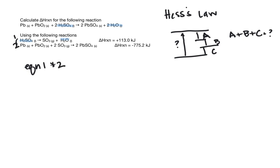We're going to multiply by two. So we have 2H2SO4 equals 2SO3 plus 2H2O. And now our delta H reaction is equal to two times 113.0, because if we have twice as much sulfuric acid, it's going to cost twice as much energy.